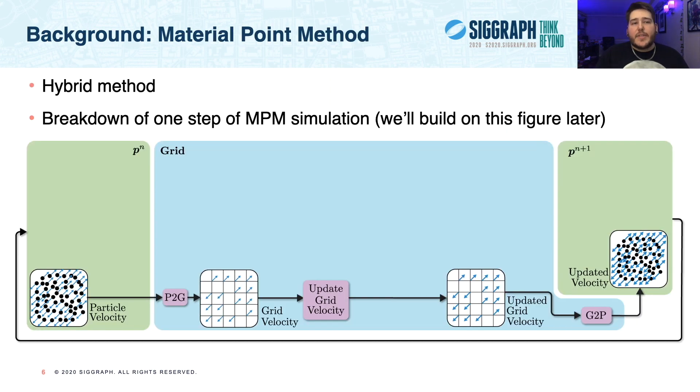Now, before delving into anisompm, let's review some background topics, starting with MPM basics. And MPM is known as a hybrid method, meaning that it discretizes a material both as a set of particles and as a grid of nodes. And MPM uses the particles to keep track of data like velocity and position, while the grid nodes are used as a scratchpad for force computations.